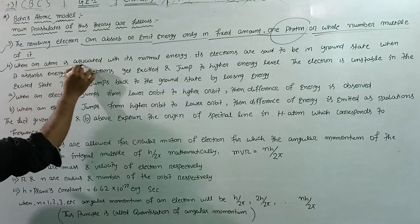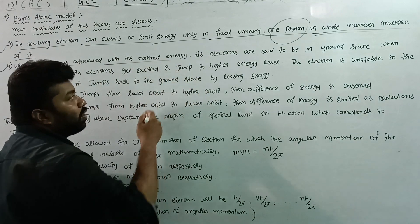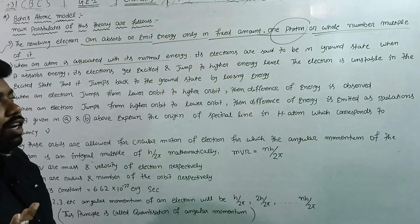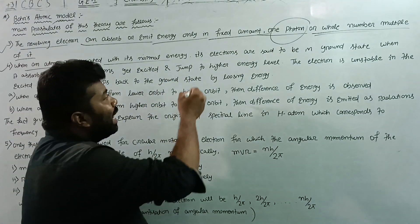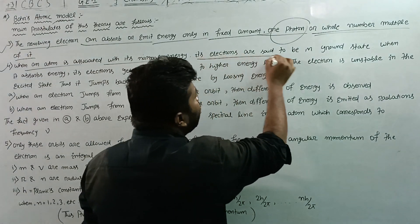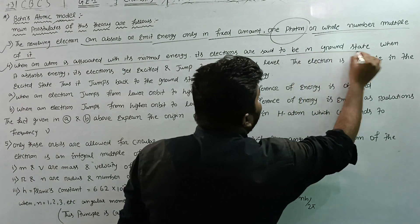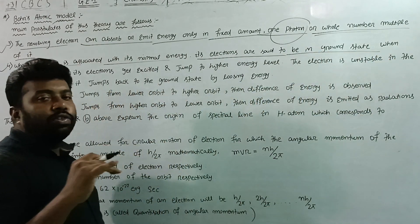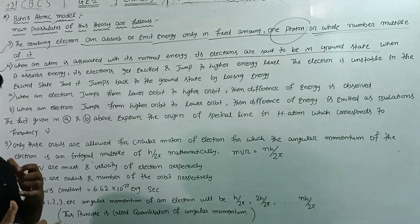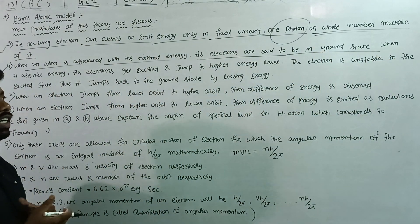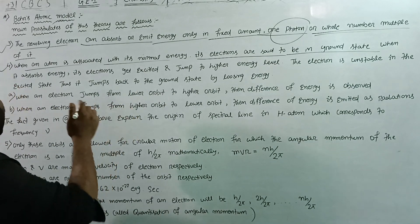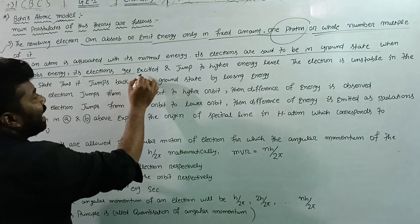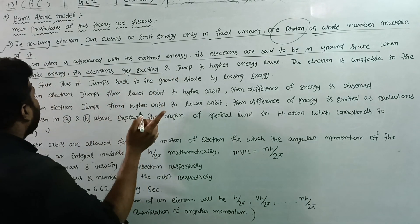When an atom is associated with a normal energy, its electron is said to be in the ground state. When it absorbs energy, the electron gets excited.